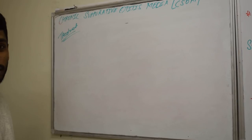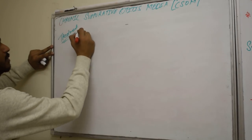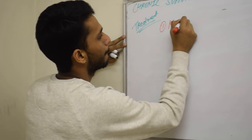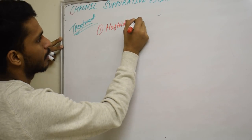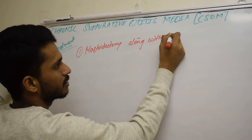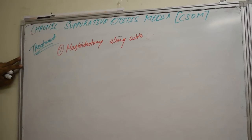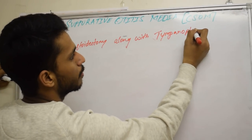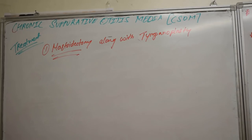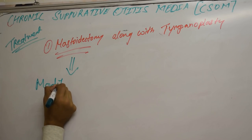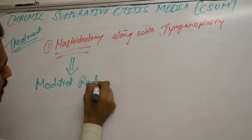The treatment for atticoantral type is straightforward — we very rarely go for conservative management and directly proceed to surgical management. The surgery is mastoidectomy, along with tympanoplasty — that is ossicular reconstruction with myringoplasty. Nowadays, instead of mastoidectomy we use modified radical mastoidectomy.